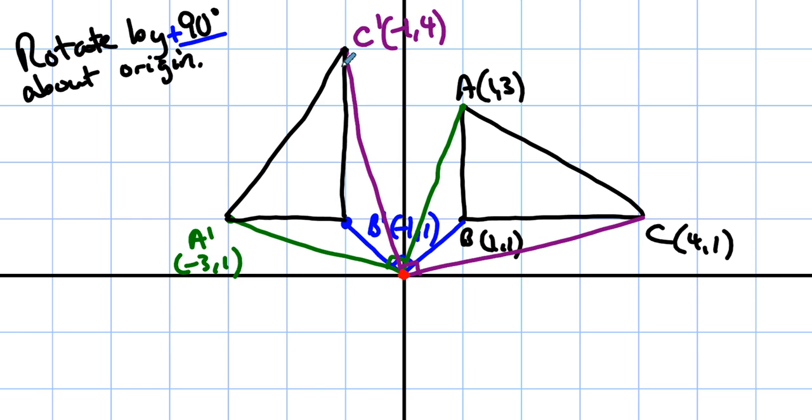So it is worth thinking for a moment about what the rule is that turns this into that. It's worth thinking about that. How did these coordinates become those coordinates? If we rotate by 90 degrees about the origin, what does the point (x, y) become?